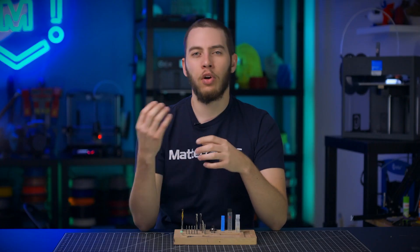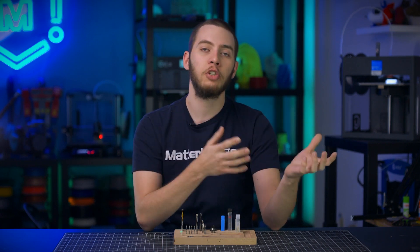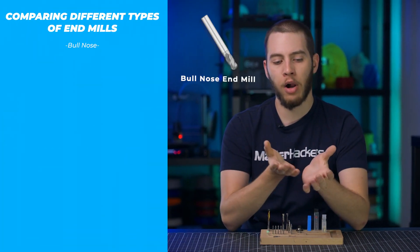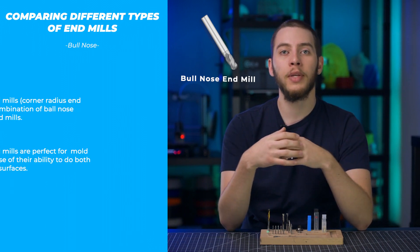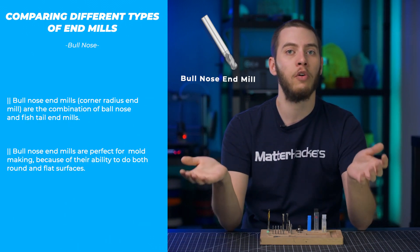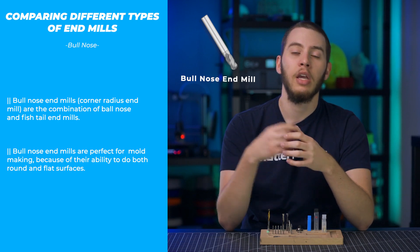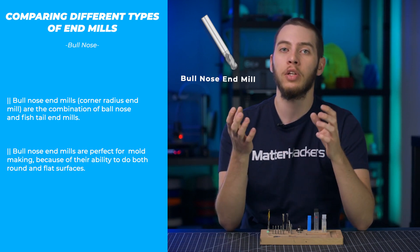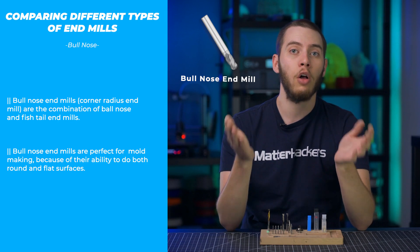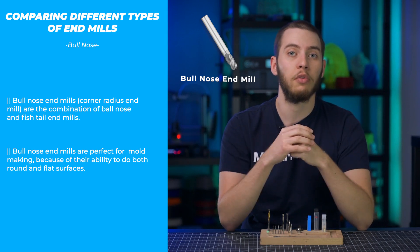Bull-nose end mills, which are also called corner radius end mills, are like a combination between fishtail and ball-nose. They have a flat bottom with some rounded corners, which means that you can have nice filleted inner corners while also avoiding the problem of scalloping. These are commonly used to make molds because you can use them to achieve flat bottom surfaces while also having nice rounded contours over the top.